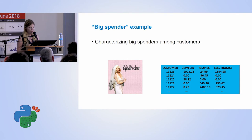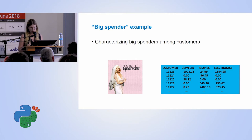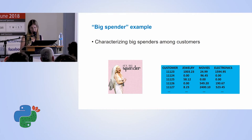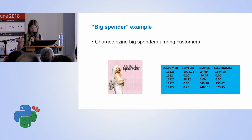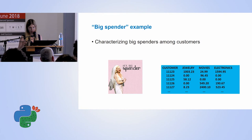Here is the big spender example. Let's imagine we own an online store and want to predict which customers will become big spenders in the jewelry department. We use data about products bought in other departments. But look at customer 11125 — the model will learn that if a customer didn't buy anything in any other department, they're probably going to be a big spender. What the model learned is actually a mistake. This is again a leakage in features problem.